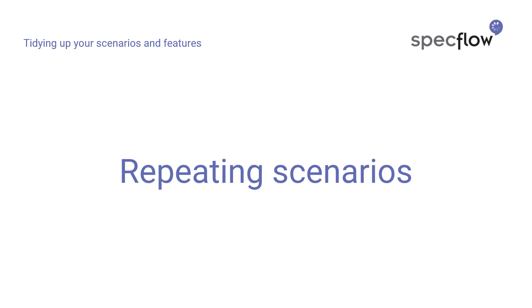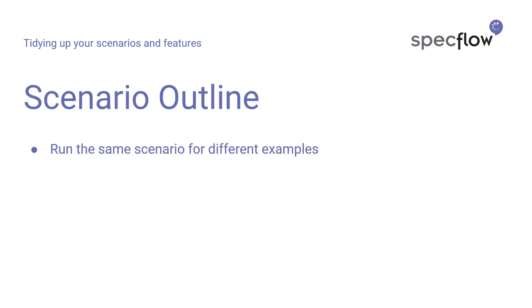You'll often encounter a situation where you end up with different scenarios that exercise the same behavior, just with different sets of input and output data. Repeating the same scenario and the same steps over and over again throughout your feature file quickly leads to degrading readability, and that's exactly what we don't want. To clean up these repeated scenarios, SpecFlow and the Gherkin syntax offer the scenario outline.